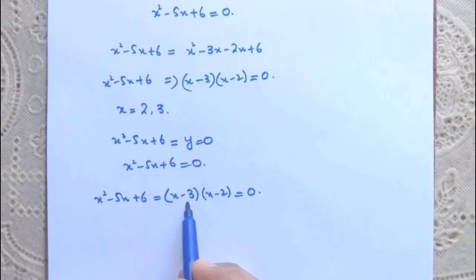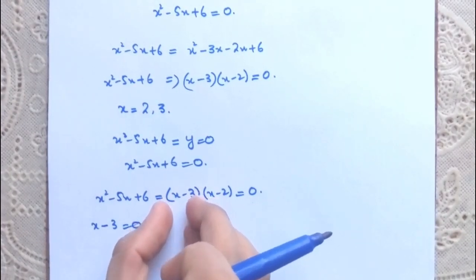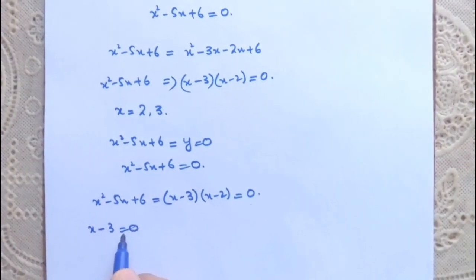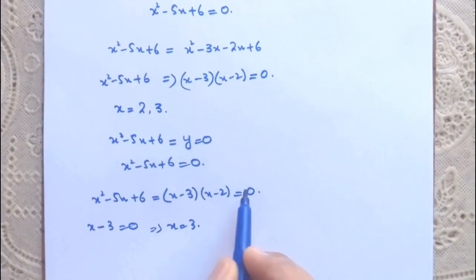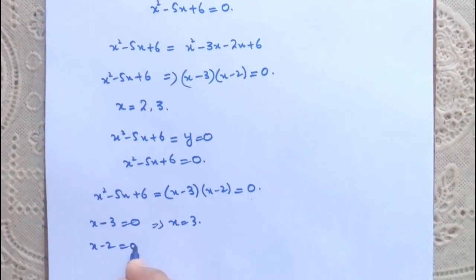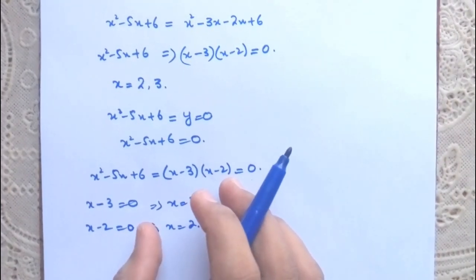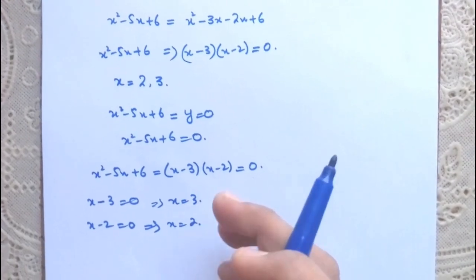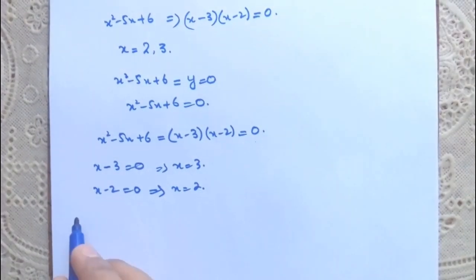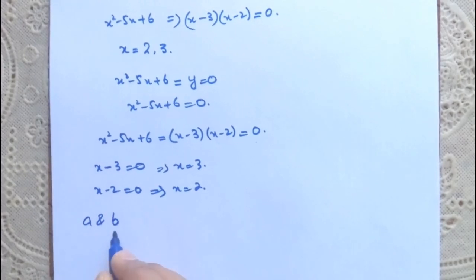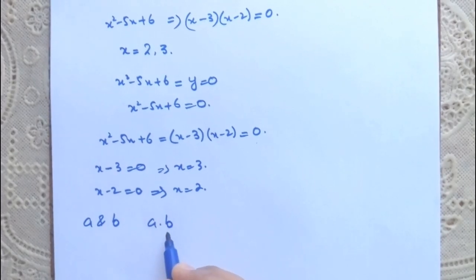If we suppose x - 3 = 0, then x = 3. And if x - 2 = 0, then x = 2. So the conclusion is: when we solve any equation, we first factorize it, then set every factor equal to 0 to find x's values. Our concept is that the product a·b will be 0 when either a = 0 or b = 0.